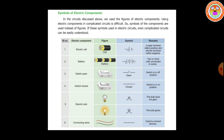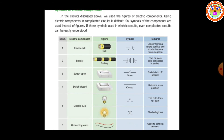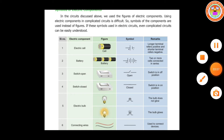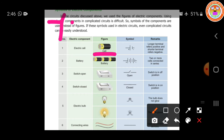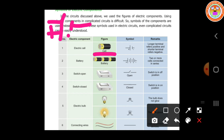Electric cell. We have already discussed about the electric cell. For the cell symbol, we have to use two lines — one long terminal and another short terminal. The long terminal denotes positive and the small terminal denotes the negative end.